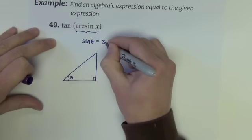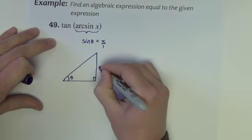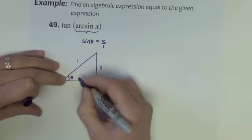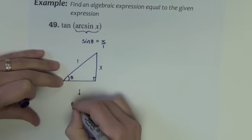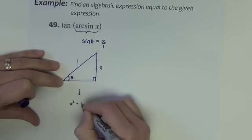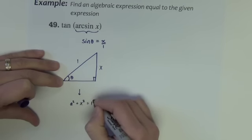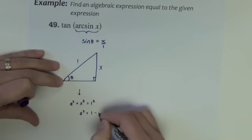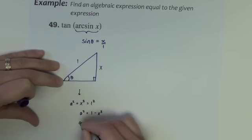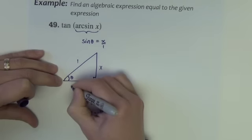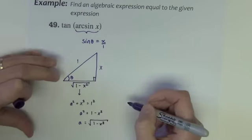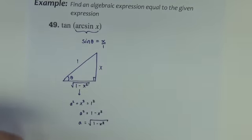It's x, which is the same as x over 1, which is the opposite over the hypotenuse. This side can be found with Pythagorean's theorem. It could be a squared plus x squared equals 1 squared. So that would be a squared equals 1 minus x squared. So a is the square root of 1 minus x squared. That's the length of that side in terms of x.